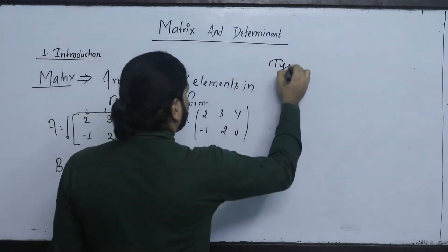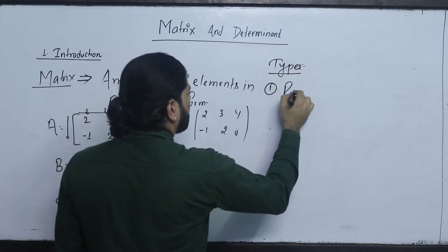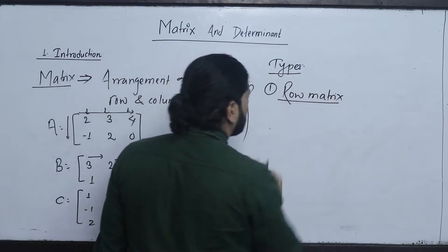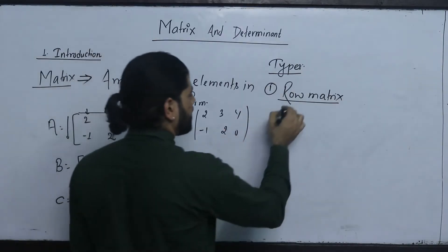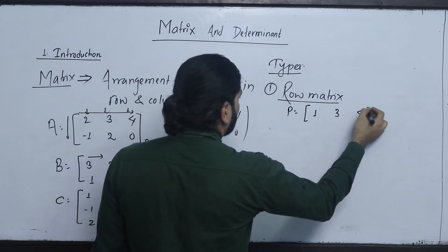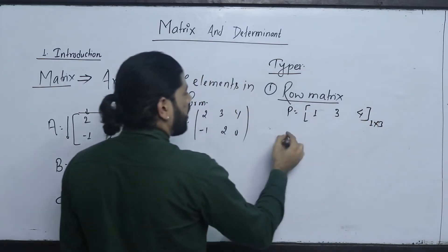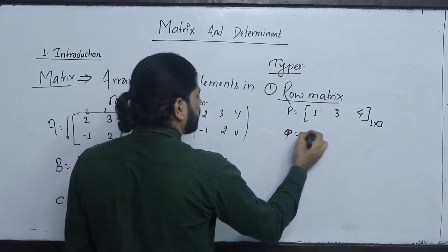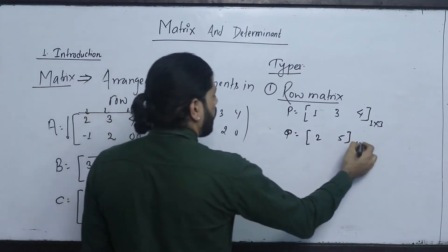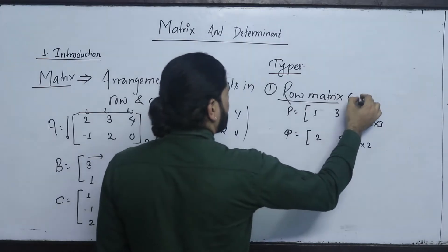There are different categories and different types. The first one is the row matrix — also called a row vector. A row matrix has a single row. For example, P equals [1, 3, 4], which is 1 by 3, and Q equals [2, 5], which is 1 by 2 with 2 columns.